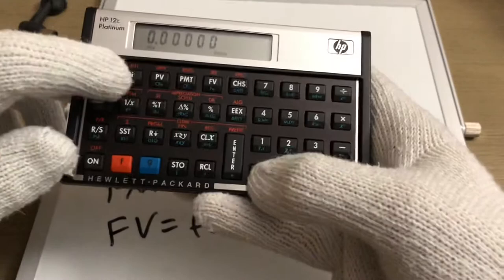All we have to do is hit FV and that is the future value of your $1000 over 10 years at a 10% interest rate.